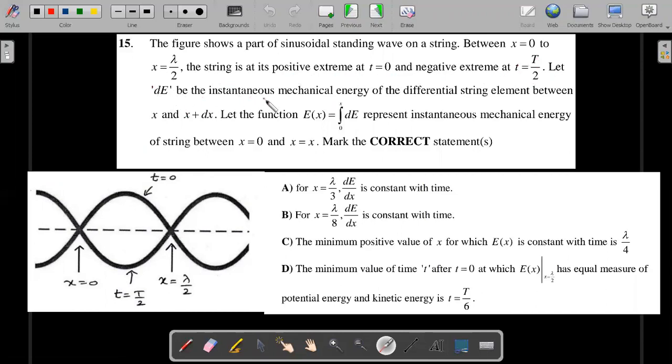Let dE be the instantaneous mechanical energy of the differential string element between x and x plus dx. So some small differential element—we're talking about the energy of that material, both combination of KE and PE called mechanical energy at that particular instant.